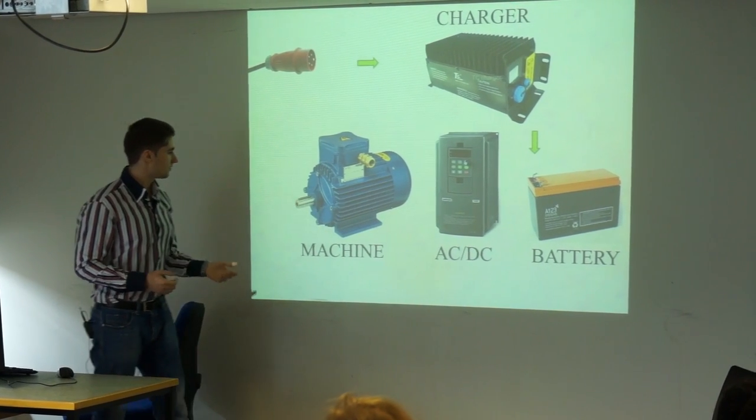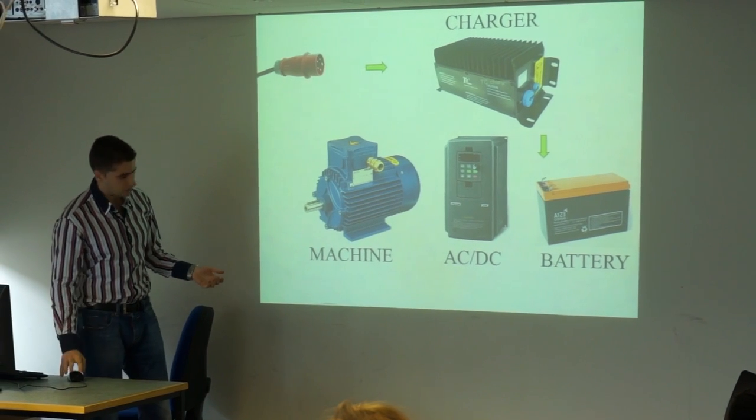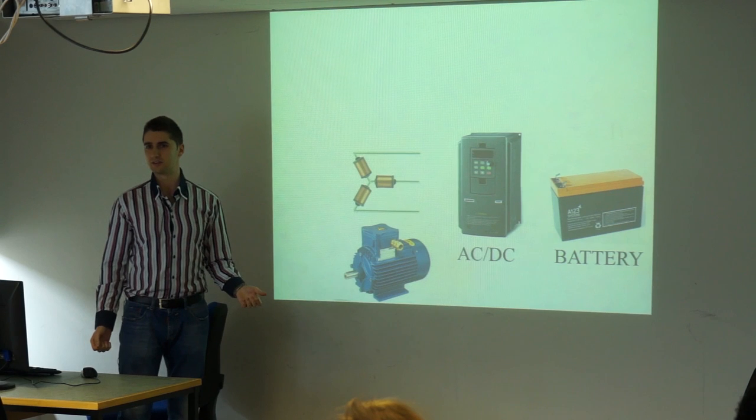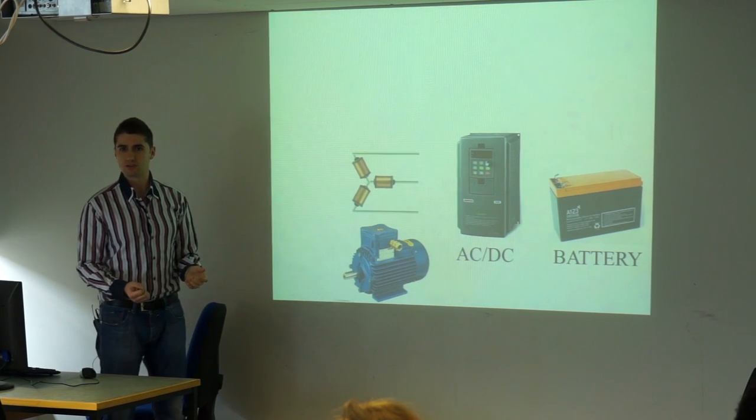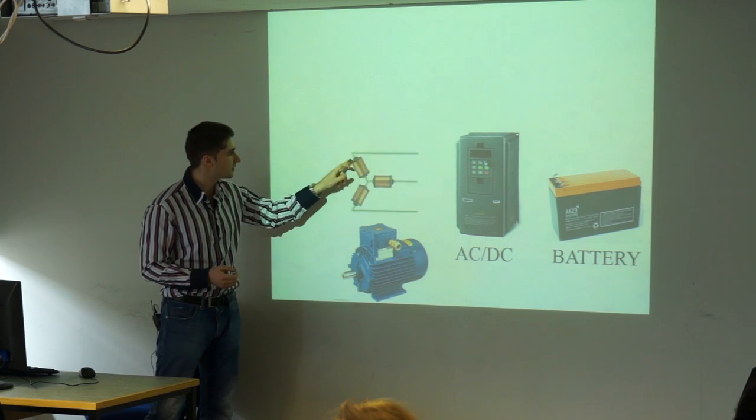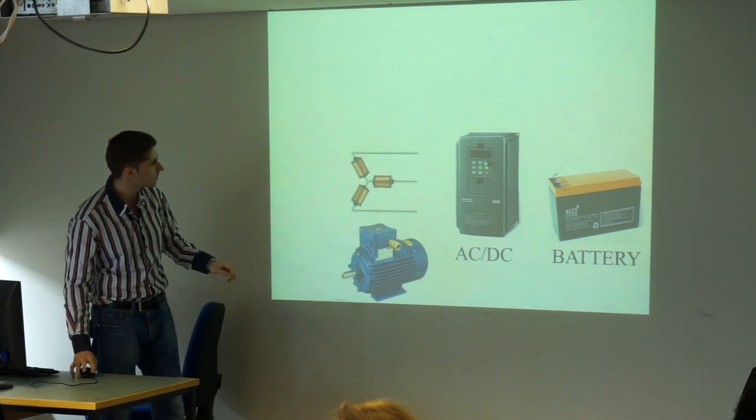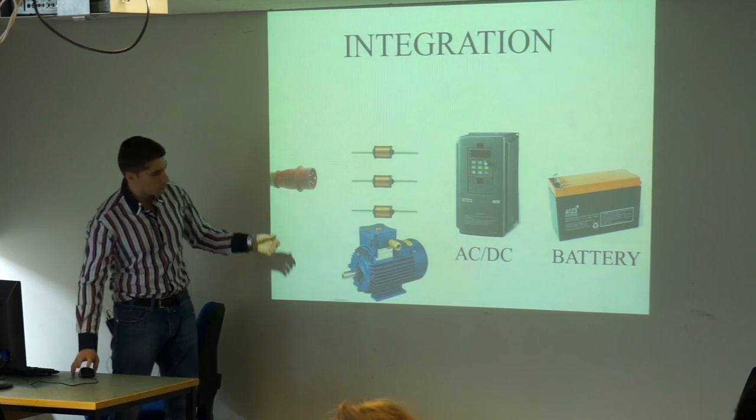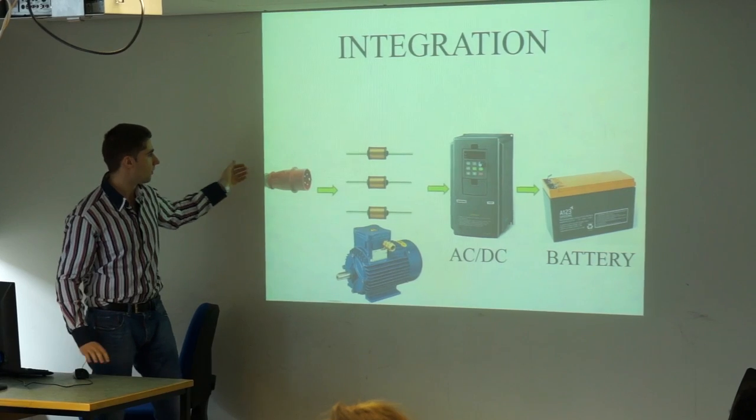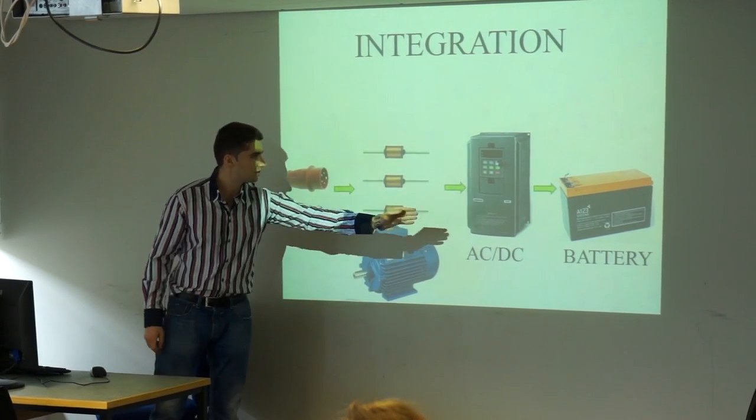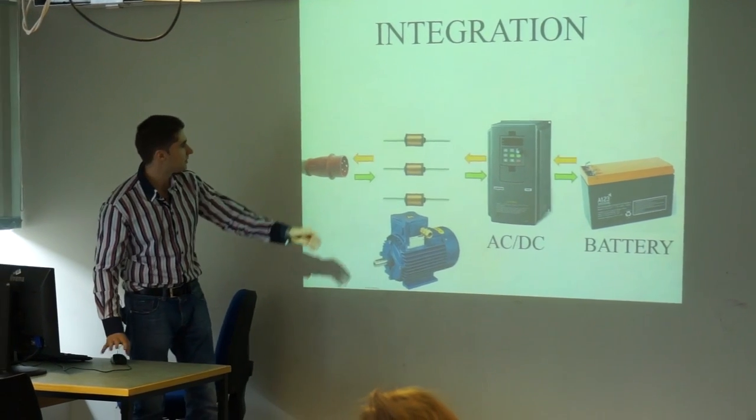But then they observed that this electric machine and they saw that this machine actually has three windings in it. So they proposed to perform some hardware reconfiguration to disconnect these windings from each other and to connect them to mains. So now the power can flow from the mains into the battery, from the grid into the battery, and also from the battery into the grid.